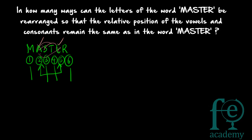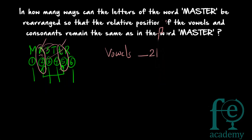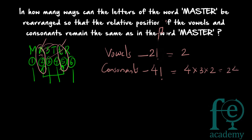There are two positions for vowels and two vowels, so vowels can be rearranged in two factorial ways, which equals two. There are four consonants - M, S, T, and R - and four positions, so consonants can be rearranged in four factorial ways, which equals four into three into two, giving twenty-four. The total number of arrangements equals the number of vowel arrangements multiplied by consonant arrangements: two into twenty-four equals forty-eight.